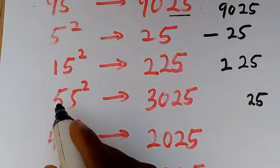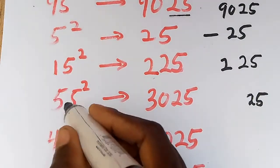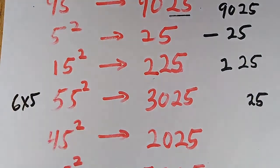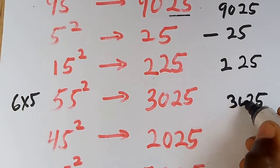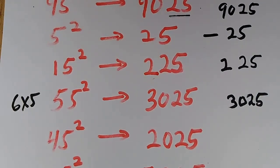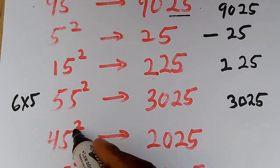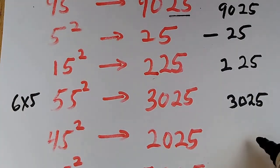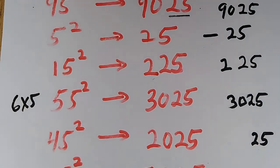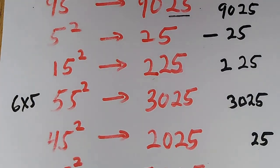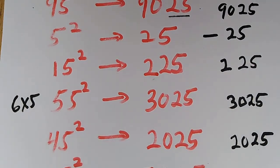For 55 squared: write 25, then the number next to 5 is 6, so 6 times 5 gives us 30. Write it in front: 3025. For 45 squared, the last result is 25. The number next to 4 is 5, so 5 times 4 gives us 20. Answer: 2025.